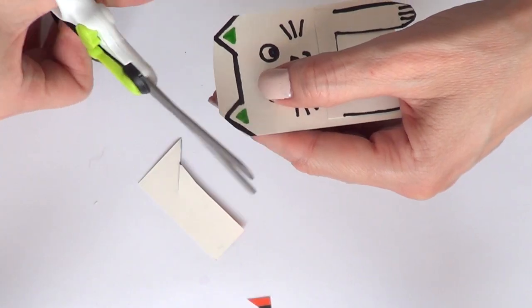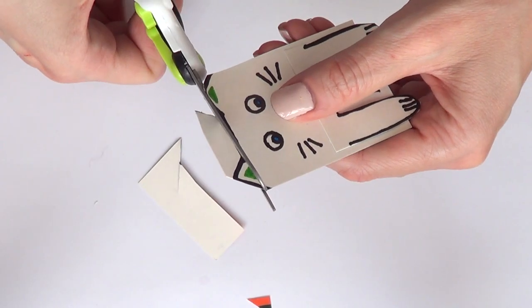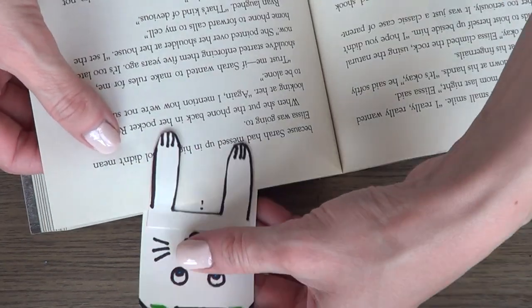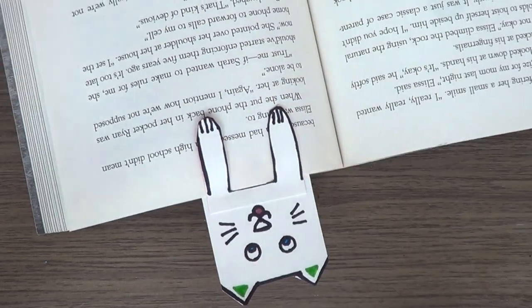Then I'm just going to cut the excess on the top part because I kind of forgot to cut this part before. And that's pretty much it. You have now your own kitty book holder or separator.